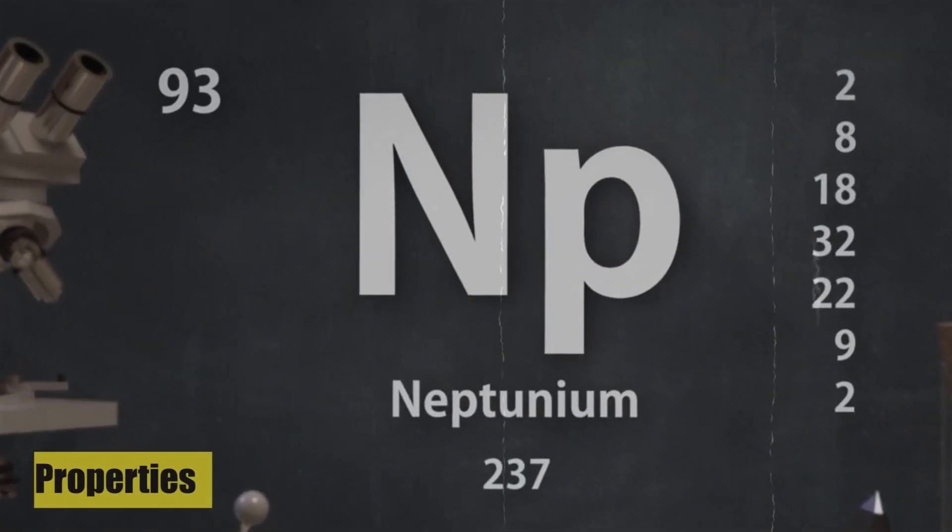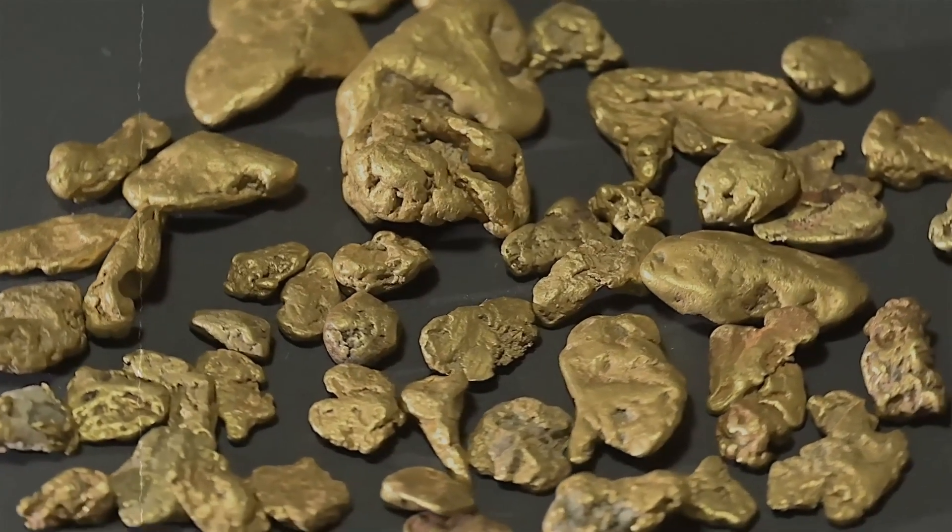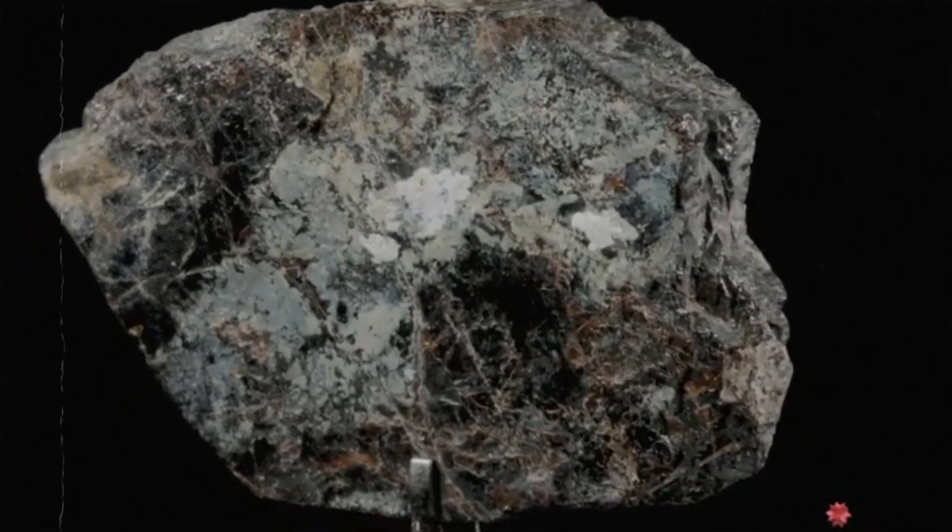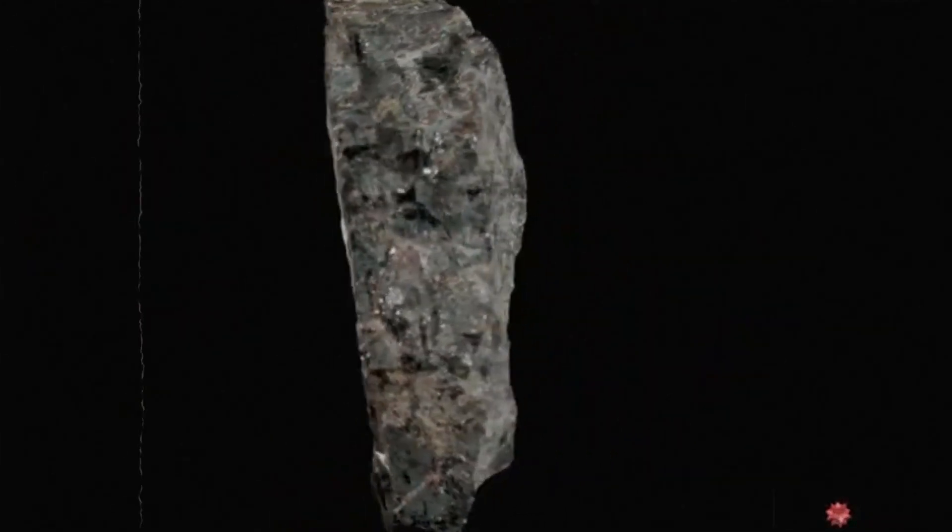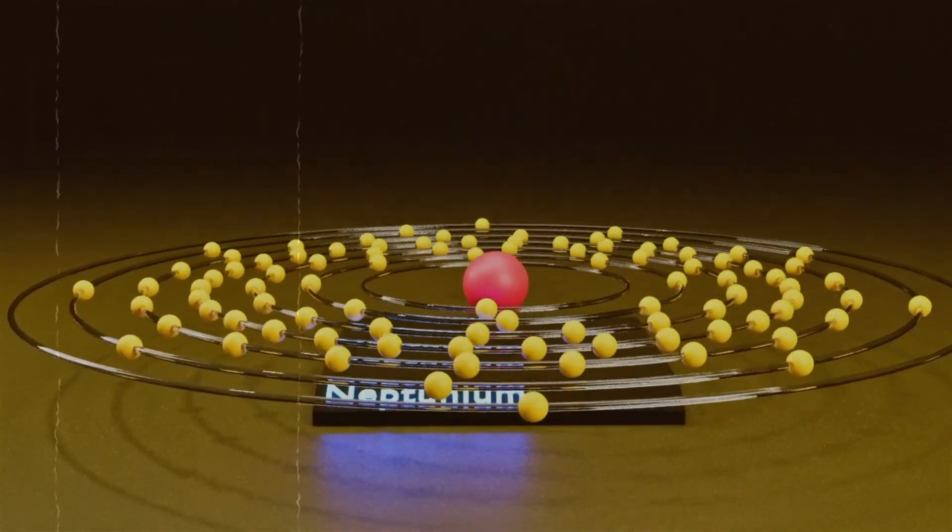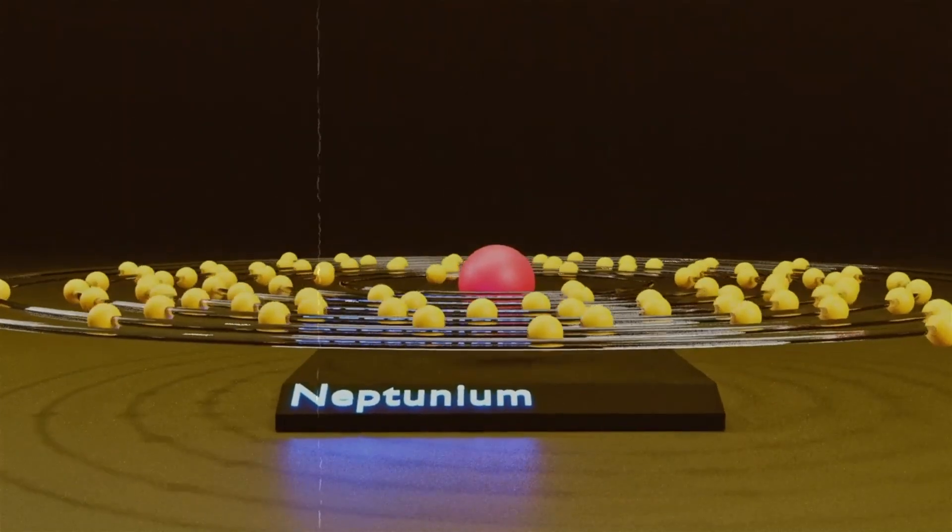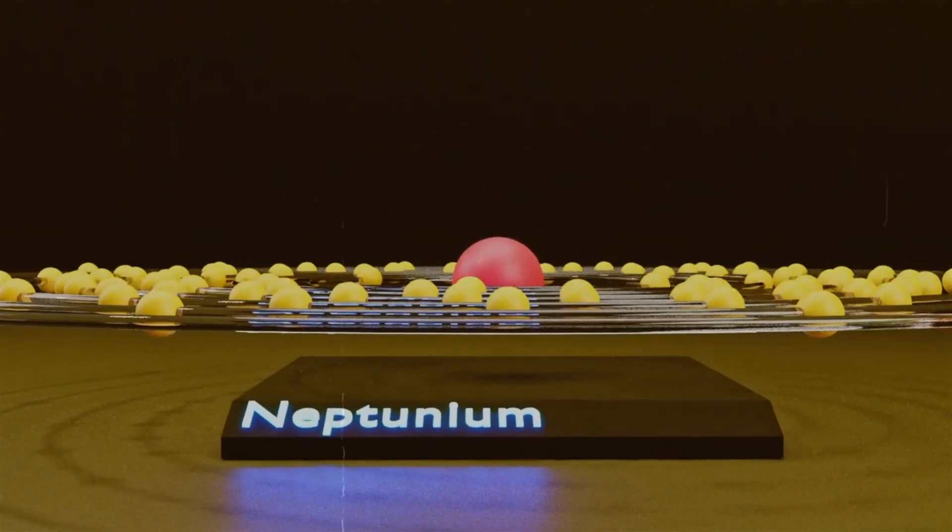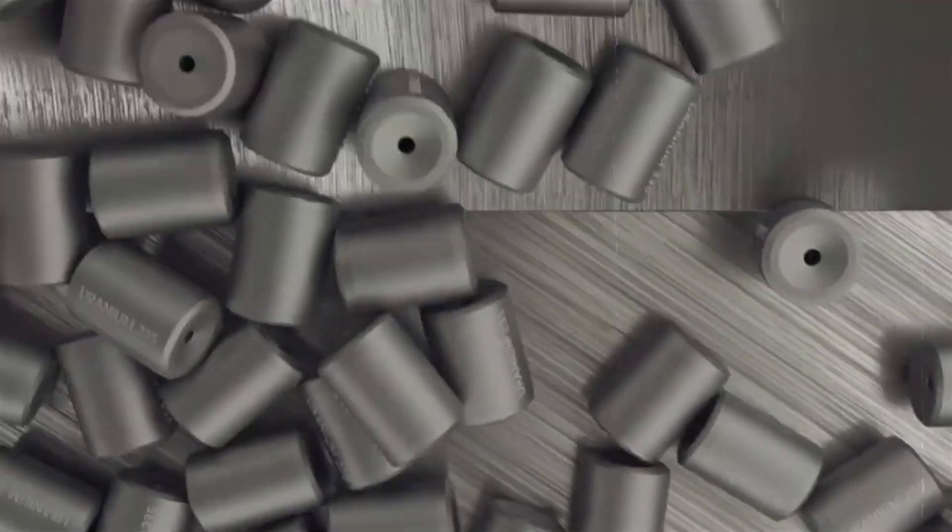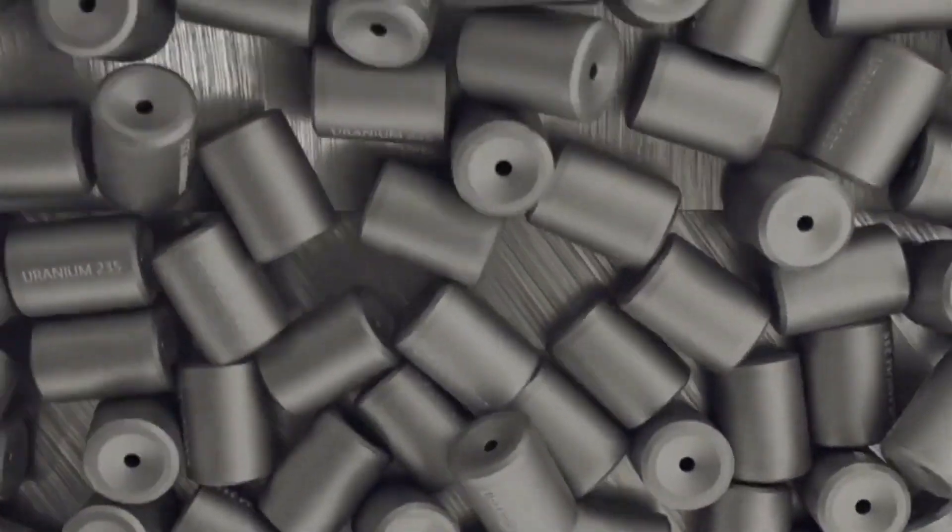Properties: Neptunium possesses several notable properties. Physical properties: Neptunium is a silvery metallic element that tarnishes in air, similar to other actinides. It has a melting point of 640 degrees Celsius and a boiling point of approximately 3902 degrees Celsius. Neptunium is a radioactive element, and its isotopes have varying half-lives.